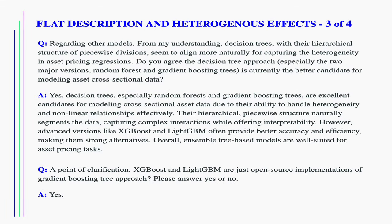Regarding other models, decision trees with their hierarchical structure of piecewise divisions seem to align more naturally for capturing heterogeneity in asset pricing regressions. Do you agree the decision tree approach, especially the two major versions, random forest and gradient boosting trees, is currently the better candidate for modeling asset cross-sectional data? Yes. Decision trees, especially random forests and gradient boosting trees, are excellent candidates for modeling cross-sectional asset data due to their ability to handle heterogeneity and non-linear relationships effectively. Their hierarchical piecewise structure naturally segments the data, capturing complex interactions while offering interpretability. However, advanced versions like XGBoost and LightGBM often provide better accuracy and efficiency. Overall, ensemble tree-based models are well suited for asset pricing tasks.